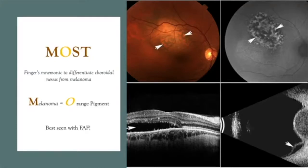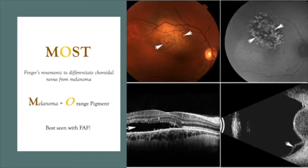On the top left, you see gross orange pigment — it's not hard to see that with indirect ophthalmoscopy and color imaging. However, on the top right, you can see that fundus autofluorescent imaging highlights and hyper-autofluoresces the orange pigment. When you have small amounts of orange pigment, the fundus autofluorescent images will help you find and diagnose its presence.